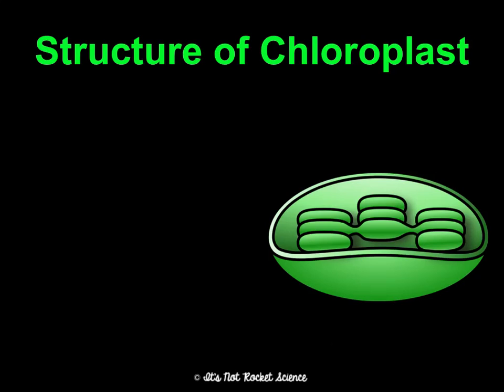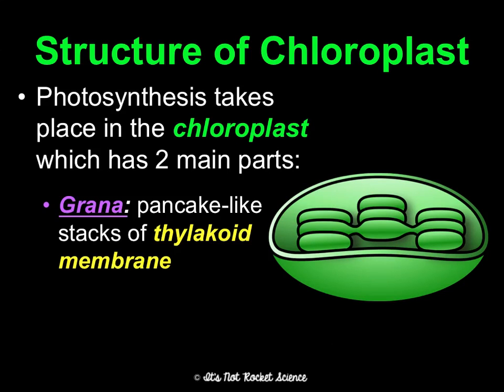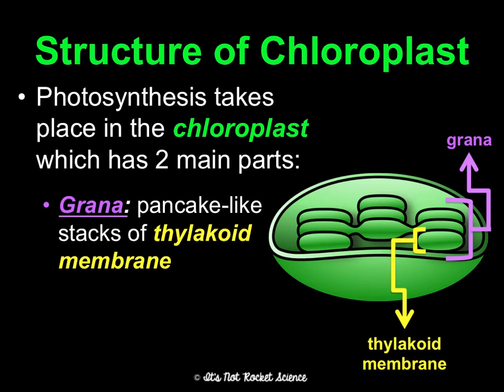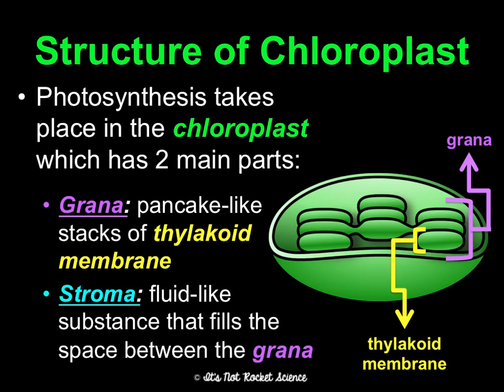Photosynthesis happens in the chloroplast, which has two different parts — and the two steps of photosynthesis happen in each of those two parts. First is the grana: pancake-like stacks of thylakoid membranes. The grana is like a big stack of pancakes, and the thylakoid is like an individual pancake. The other part is the fluid-like stroma, which fills the space between the grana. So we've got pancakes and we've got syrup — those are the two parts.